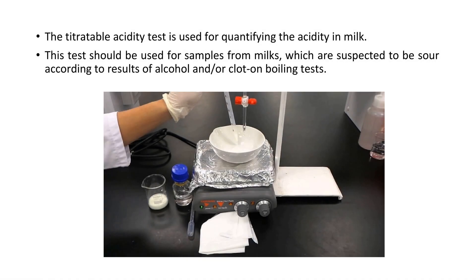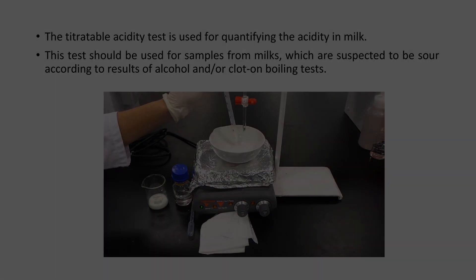The titrable acidity test is used for quantifying the acidity in milk. This test should be used for samples from milks which are suspected to be sour, according to results of the alcohol and/or clot-on-boiling test.